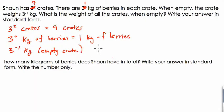Now 3 to the negative 1 is not 0.3. It's 1 divided by 3, or a third, or 1 over 3 to the 1st. It's a third of a kilogram, and that's the weight of an empty crate. So these are my own notes, right?